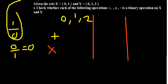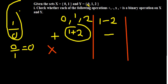Moving to subtraction on set Y: think of an impossibility. One minus two gives negative one, which is not part of set Y. So subtraction is also not a binary operation on set Y.